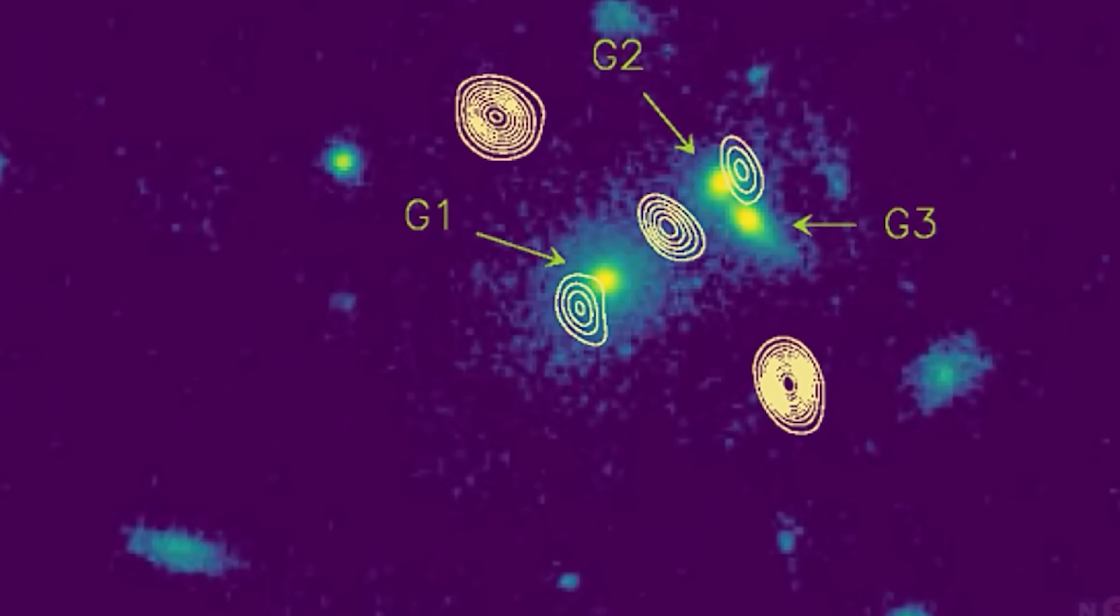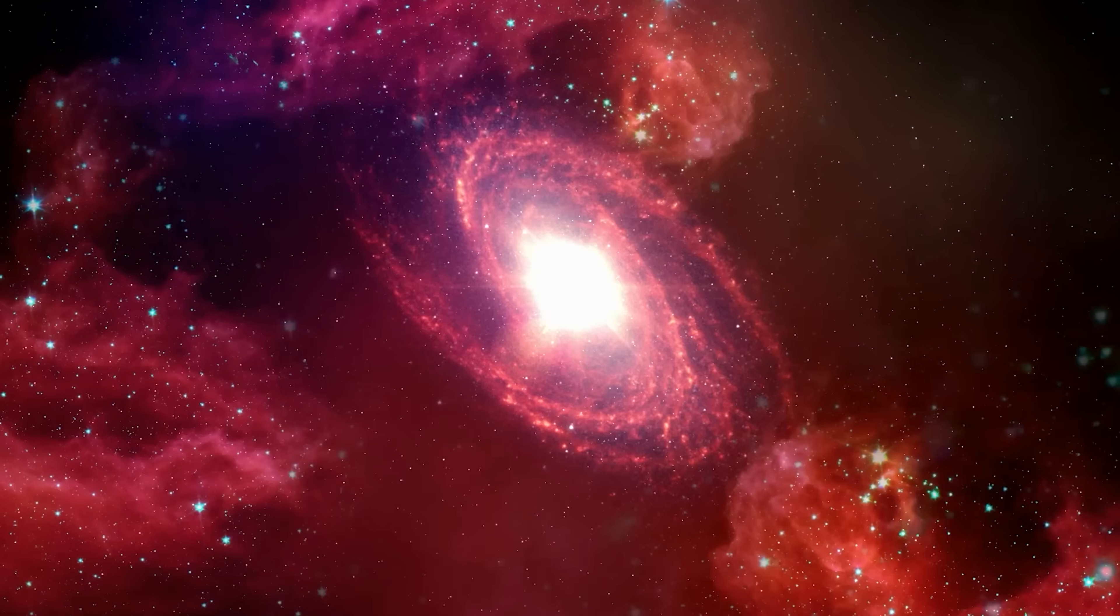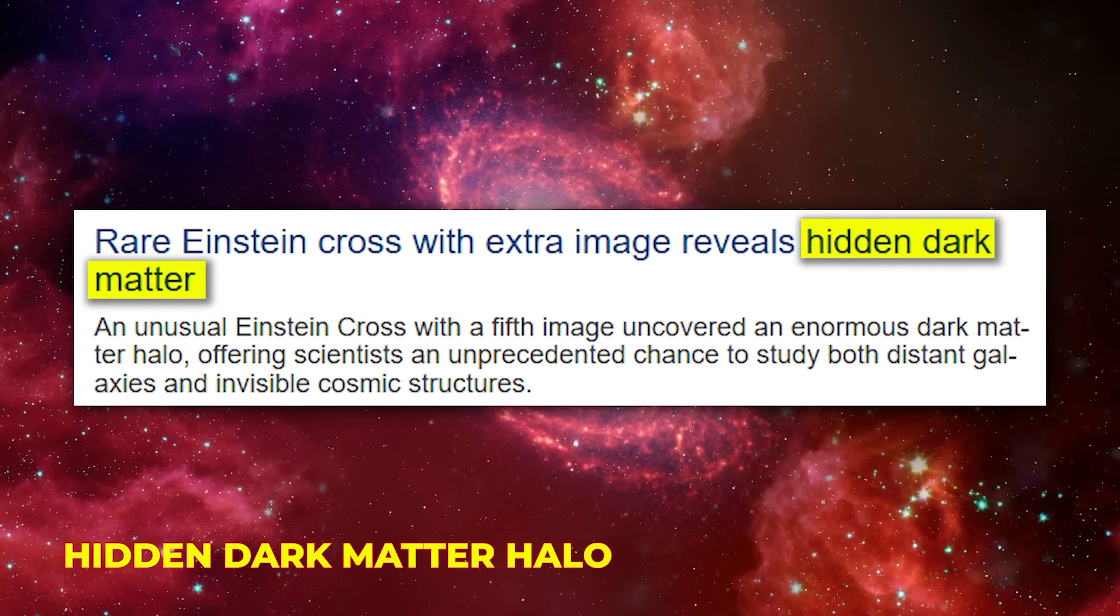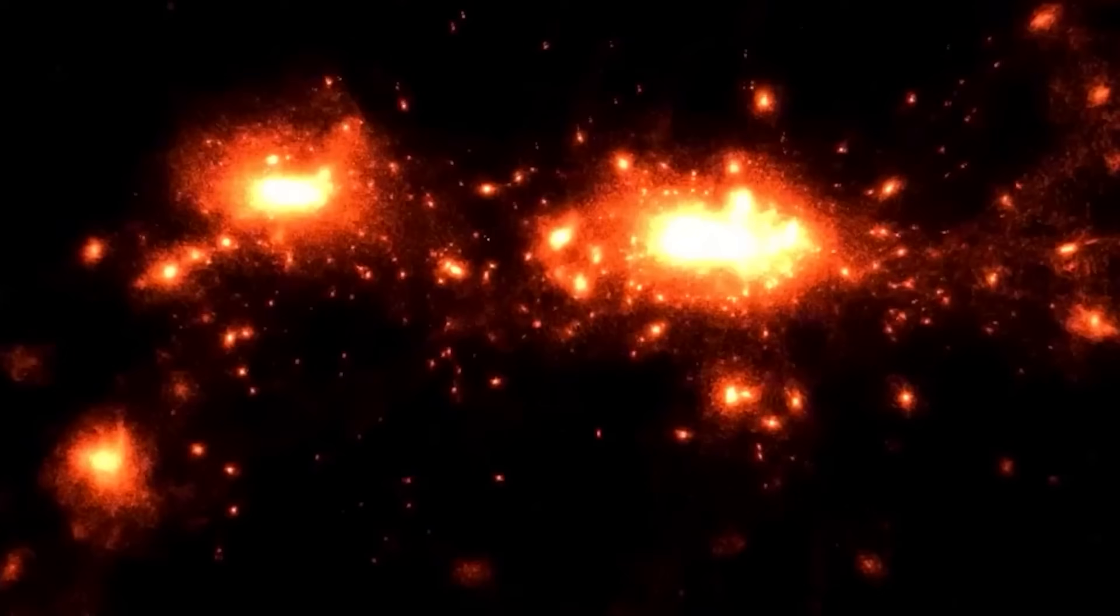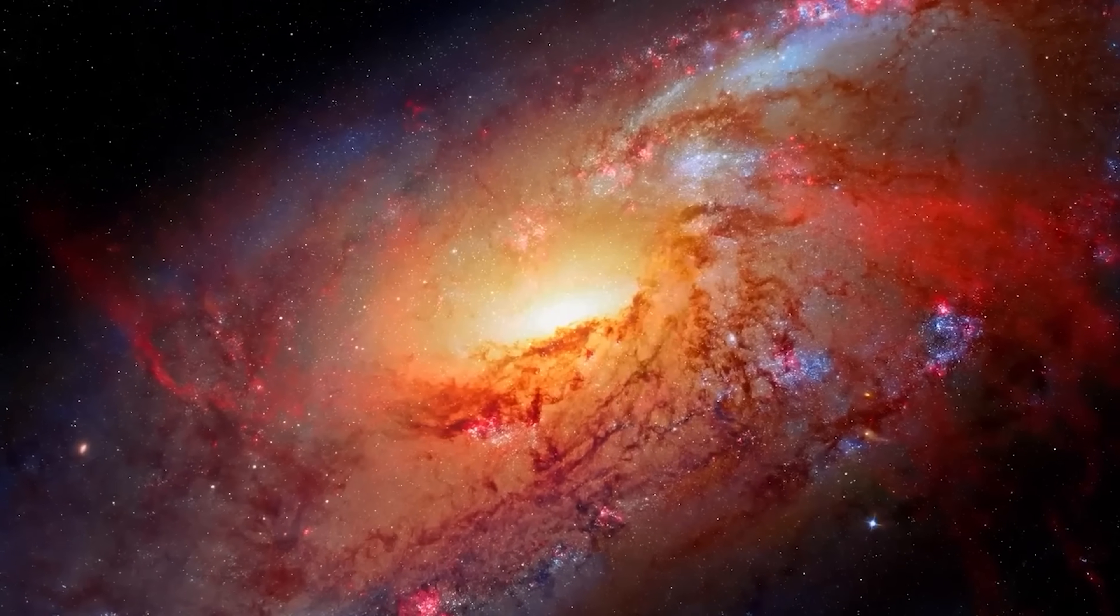Astronomers stumbled upon something completely unexpected: a fifth image that shouldn't exist. This surprising extra light turned out to be the signature of a hidden dark matter halo, offering a brand new way to map the invisible mass shaping our universe.